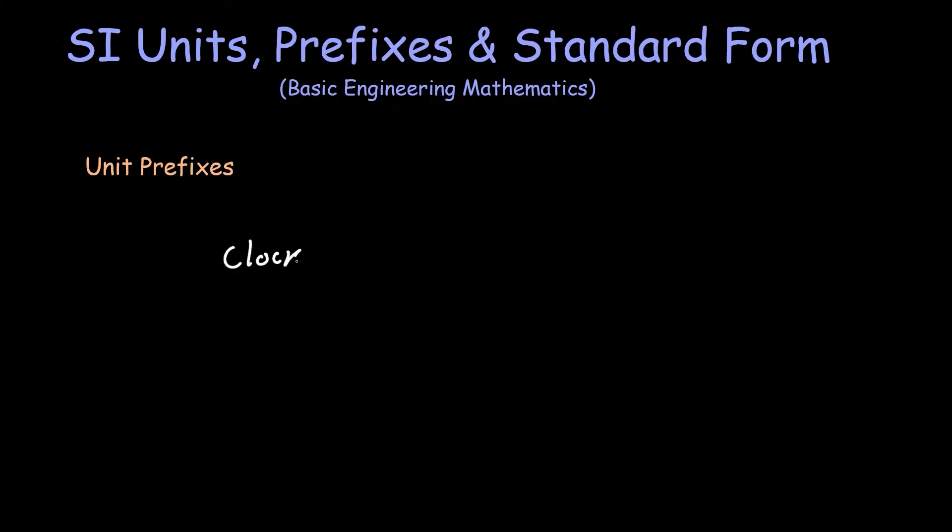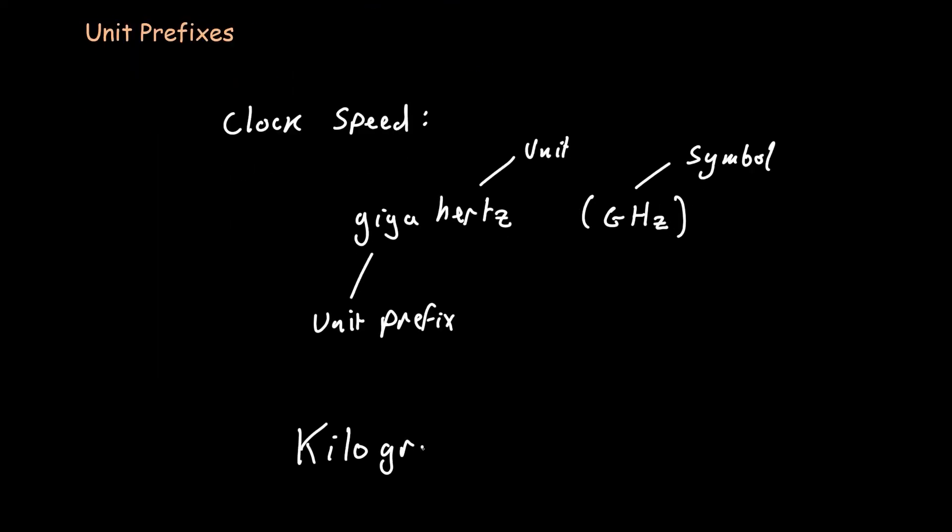So you may have noticed that your computer's clock speed is represented in gigahertz, where hertz is the unit and the giga prefix tells us the clock speed. It's also important to note that the kilogram is the only SI unit with a prefix as part of its name and symbol.